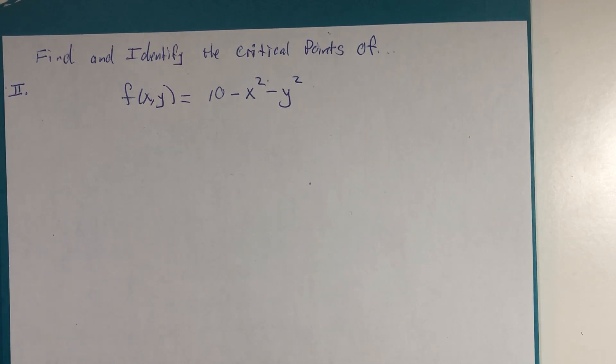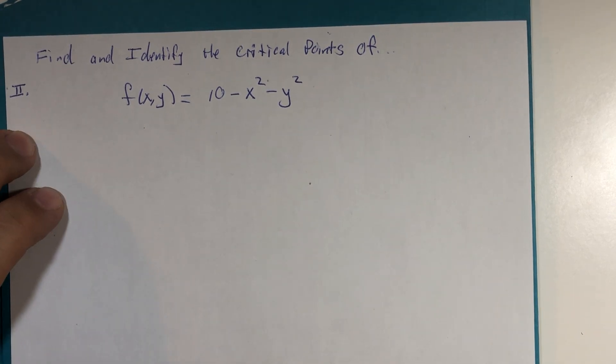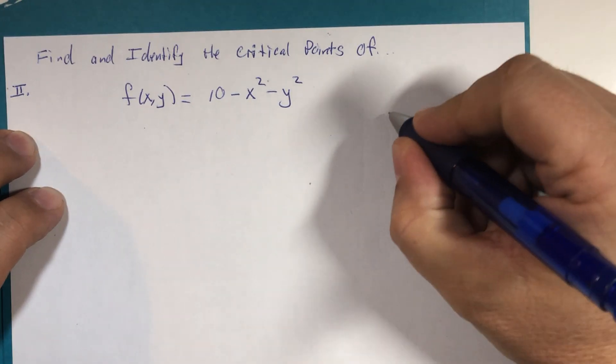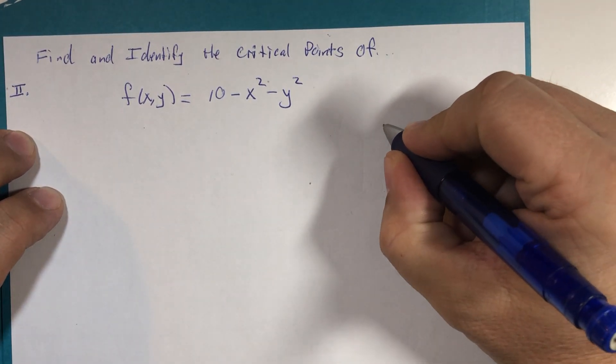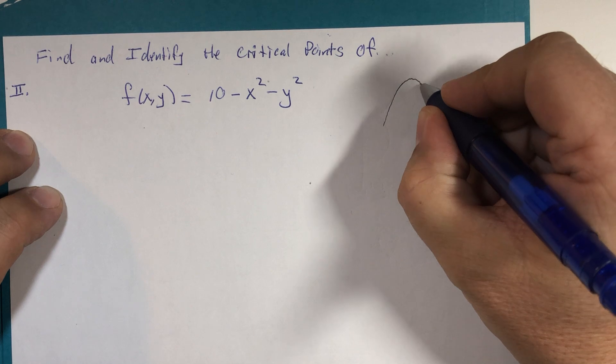All right, we're going to tackle our first example of a function of two variables and trying to find and then later identify what type of critical points it may have. Now, I picked this as a lead-in example because if we look at it carefully, we might recognize this to be the paraboloid, or as I've nicknamed it, the parabolo.